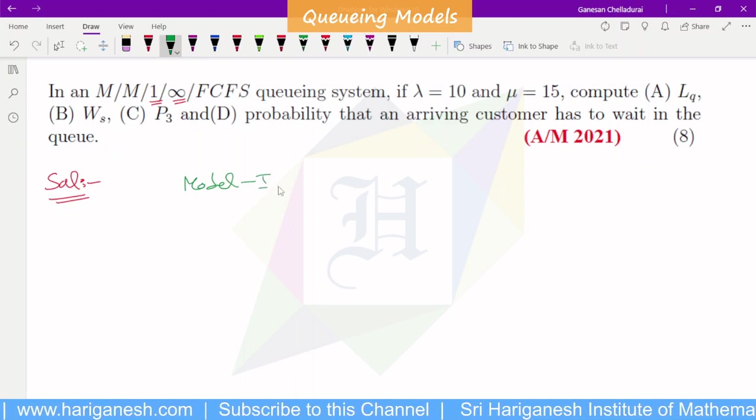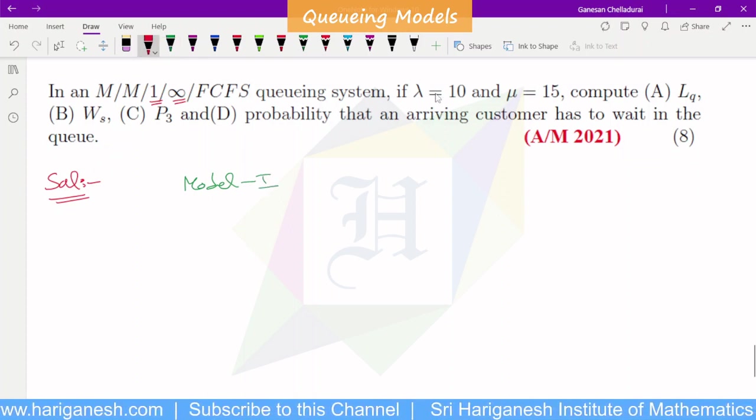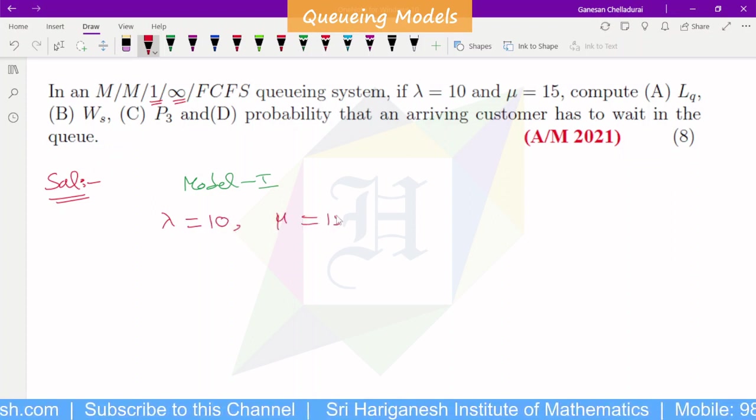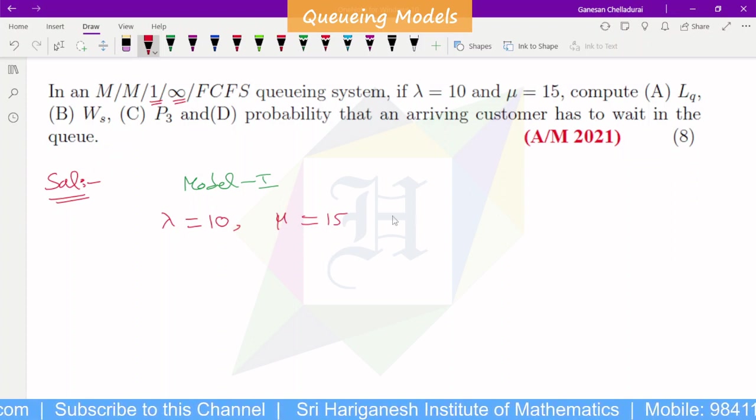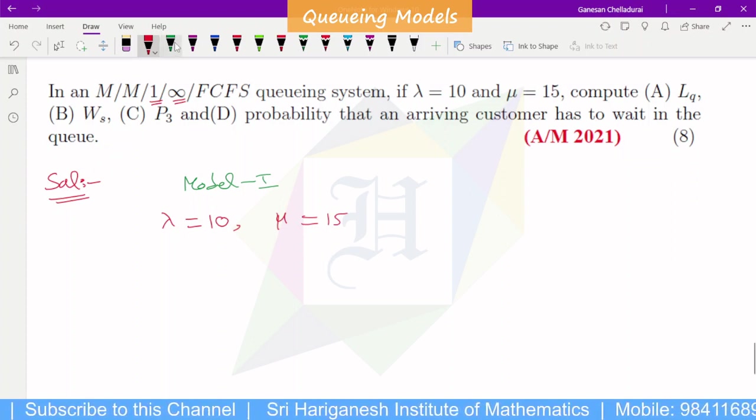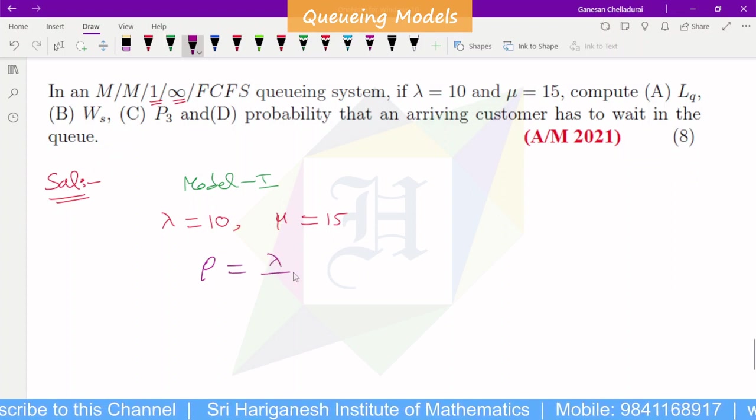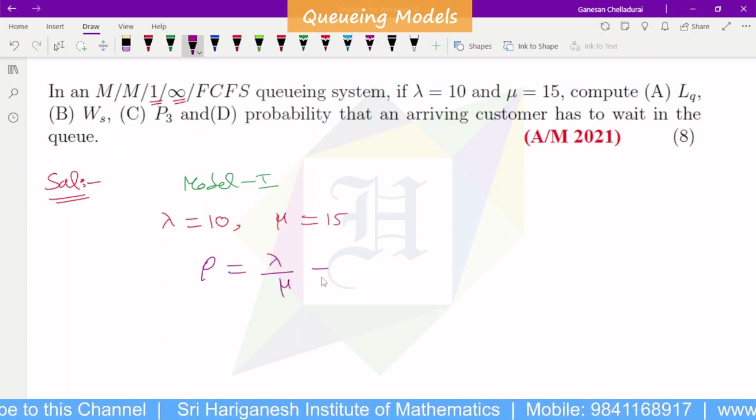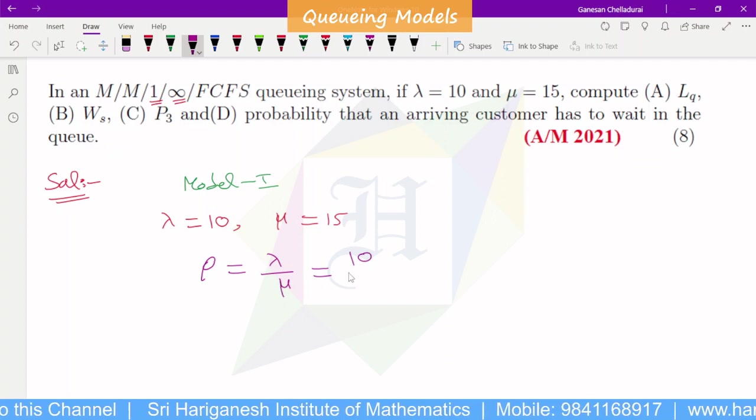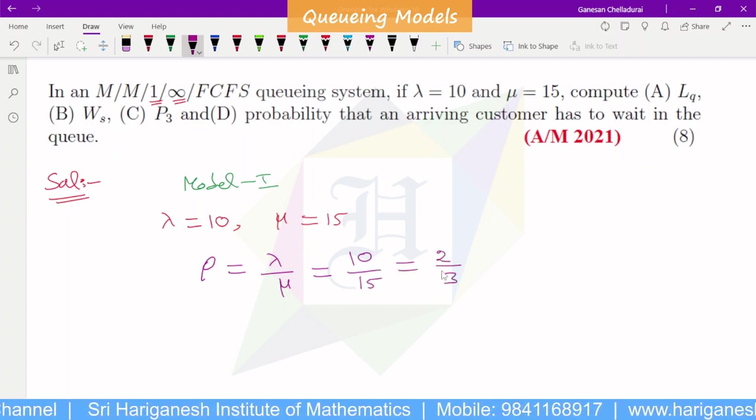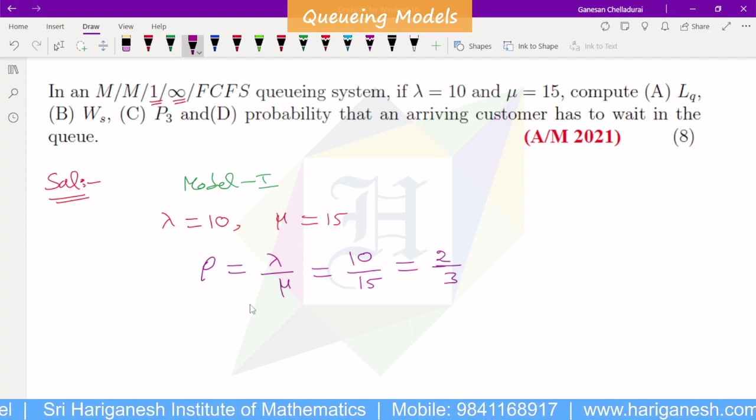Model 1. So this is lambda value, mu value. Lambda is 10, mu is 15. If you want to see the two things, rho is lambda by mu. Lambda is 10, mu is 15. If we cancel, 2 times 5 is 10, 3 times 5 is 15. So rho is 2 by 3.